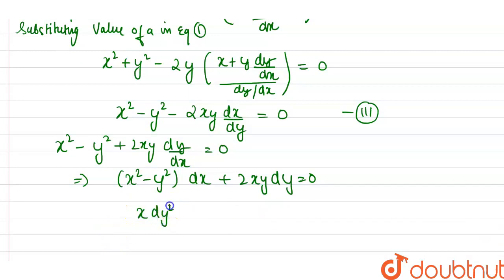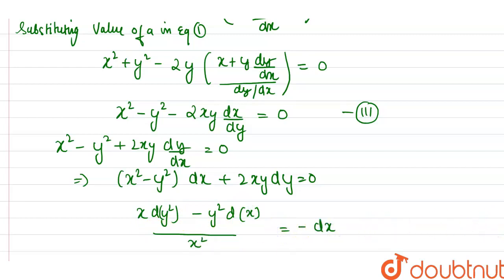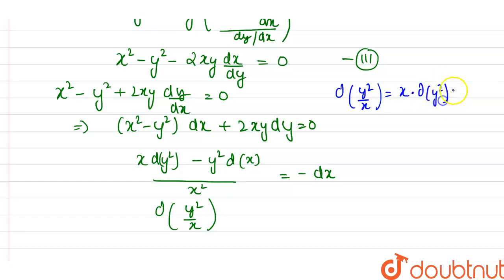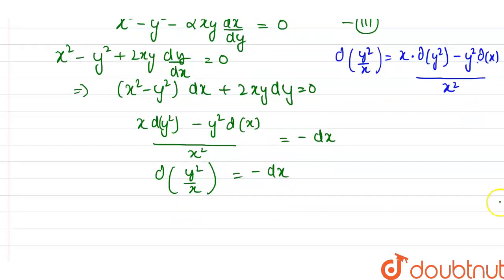We can recognize that d(y²/x) = [x·d(y²) - y²·dx] / x². So we can rewrite the equation in terms of d(y²/x) minus dx. We need to integrate both sides.